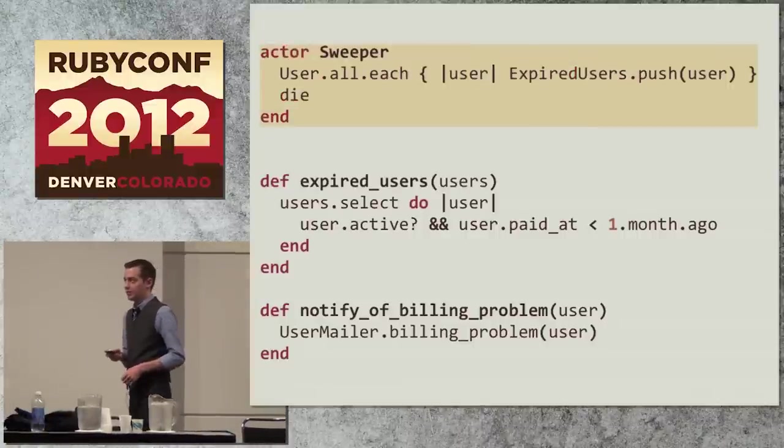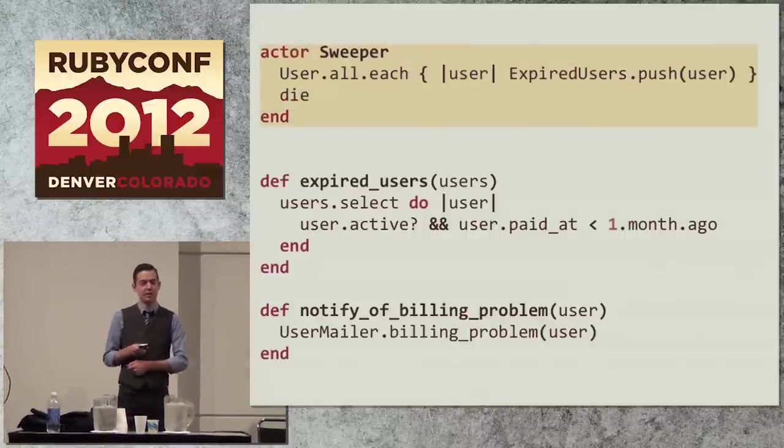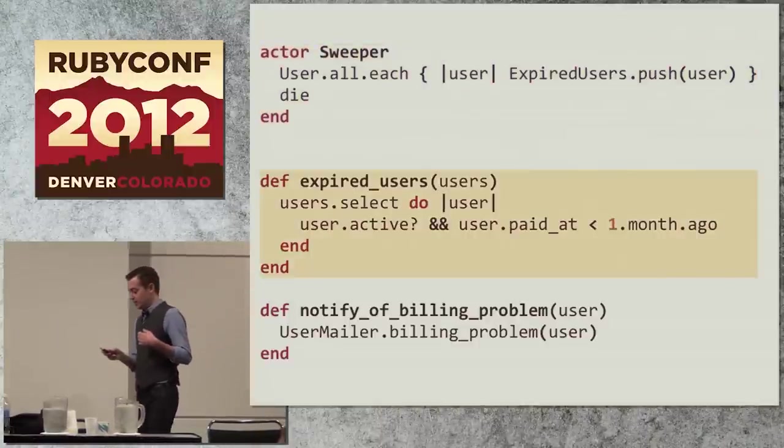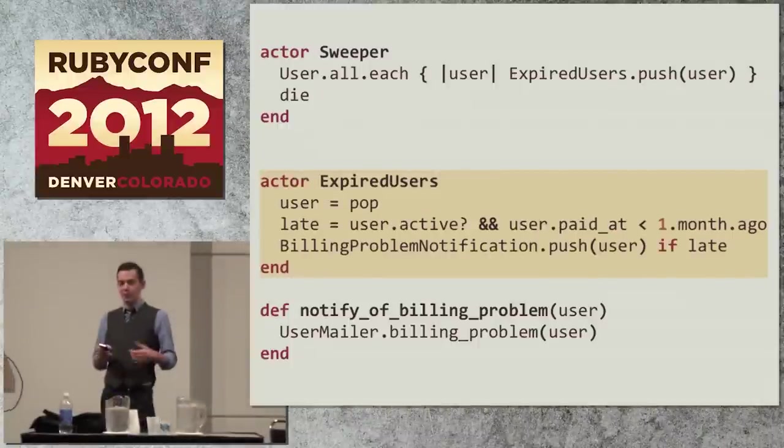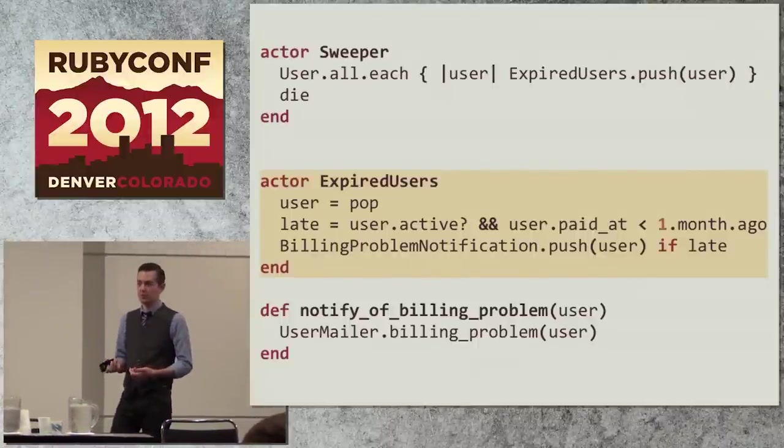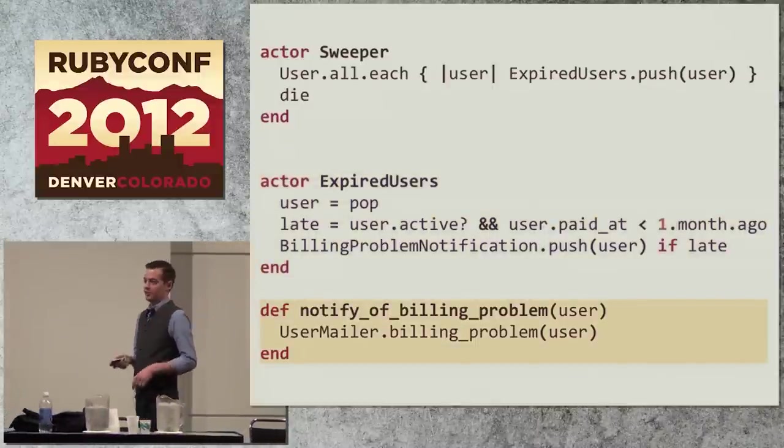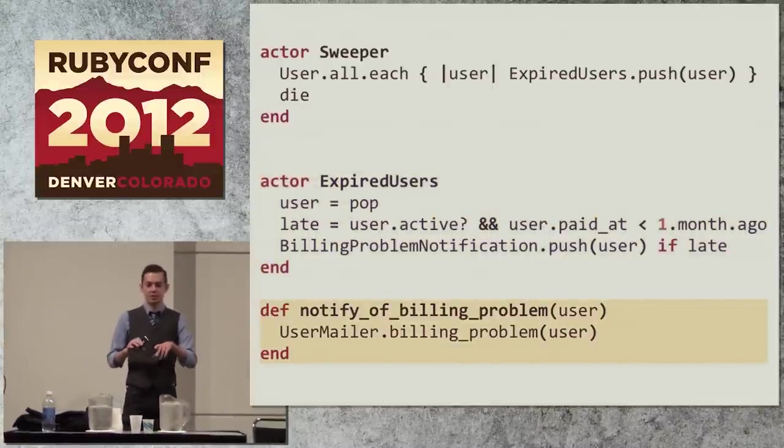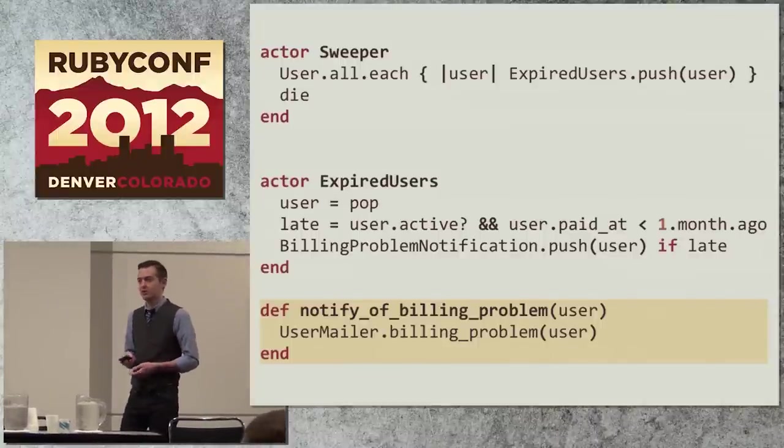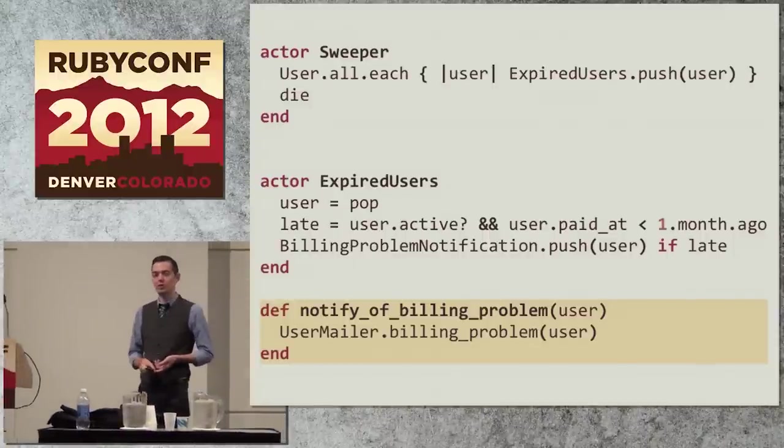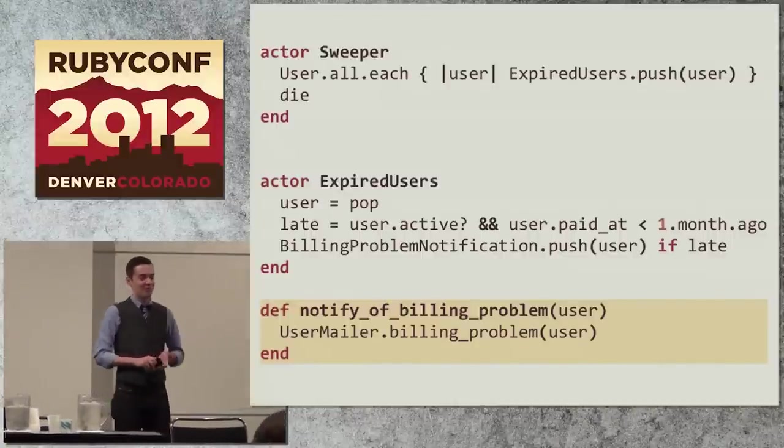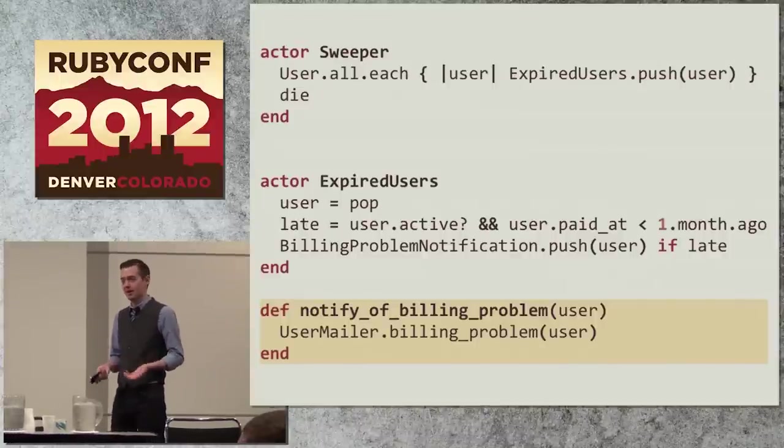It's going to do what it did before, or the expired users method, excuse me. It's just going to filter out expired users. And then we have this very trivial notify a billing problem thing that just delegates to the mailer. Let's translate this into the actor model. For the first one, I'm going to make an actor that pulls everything out of the database and just sends them one by one into the expired users actor, and then dies. The expired users actor is just going to pop a user off of its inbox. It's going to decide whether that user is late, and if it is late, it's going to forward that user on to the mailer process. And the mailer process is just going to invoke the mailer. So the imperative shell is sort of a bigger process. It takes a little while to run. It fires off all these messages to the smaller processes, and what we've just done is converted a program that could only use one core into a program that can use three cores.